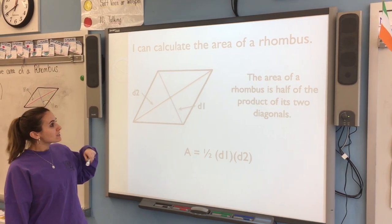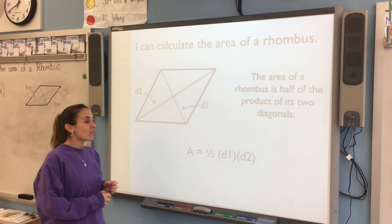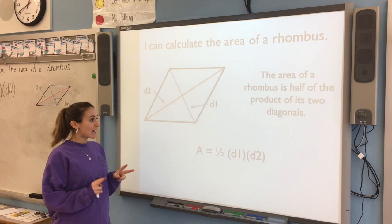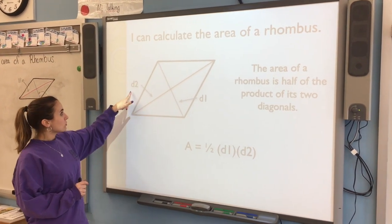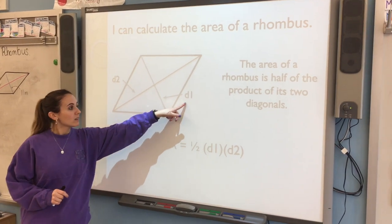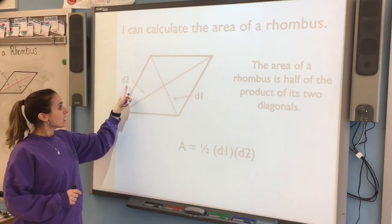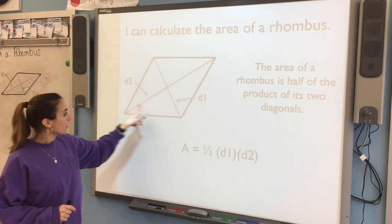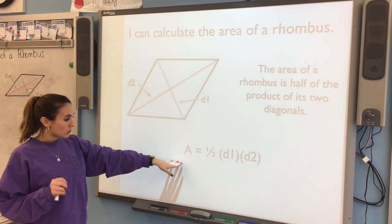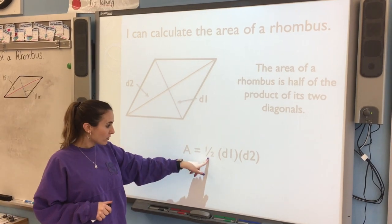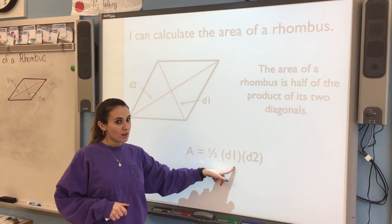So I can calculate the area of a rhombus. The area of a rhombus is half of the product of its two diagonals. So now if you look here, we have our example of a rhombus. You see d2 and d1, those are actually diagonals and the diagonals are within the actual rhombus and its measurements. And the formula for area is half the product of d1 and d2.